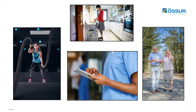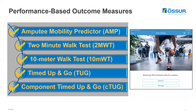Now, as all good clinicians, you probably want to verify their function, mobility, and balance issues. The pro-op makes it very easy to administer performance-based outcome measures such as the Amputee Mobility Predictor to determine the patient's functional level, the two-minute walk test or 10-meter walk test to measure mobility, the Timed Up and Go, or even the Component Timed Up and Go to measure balance, and many more.